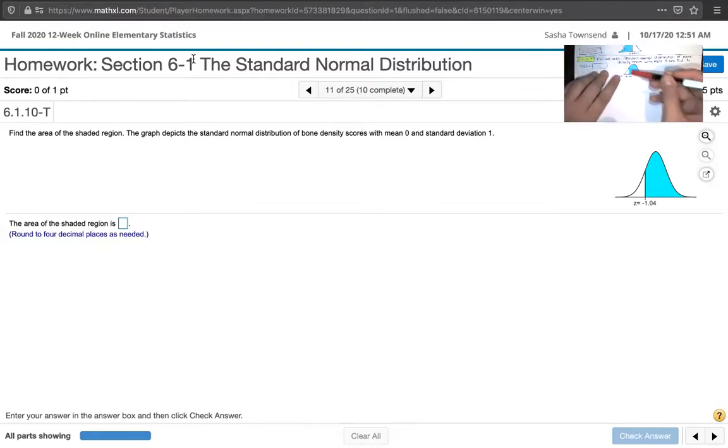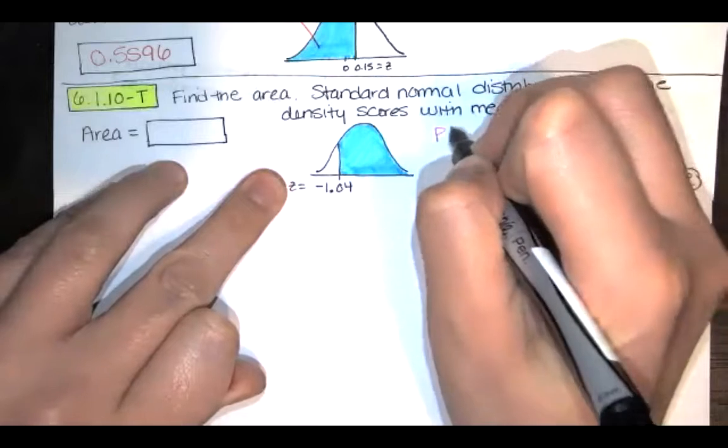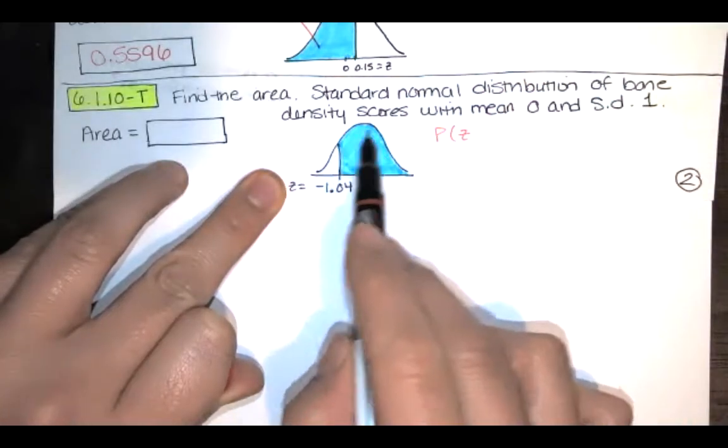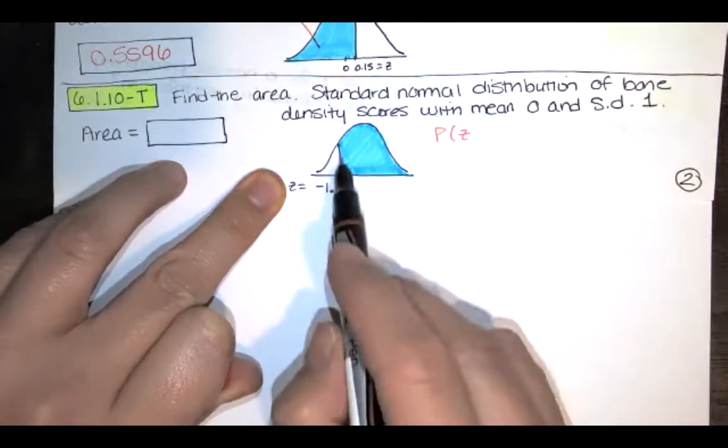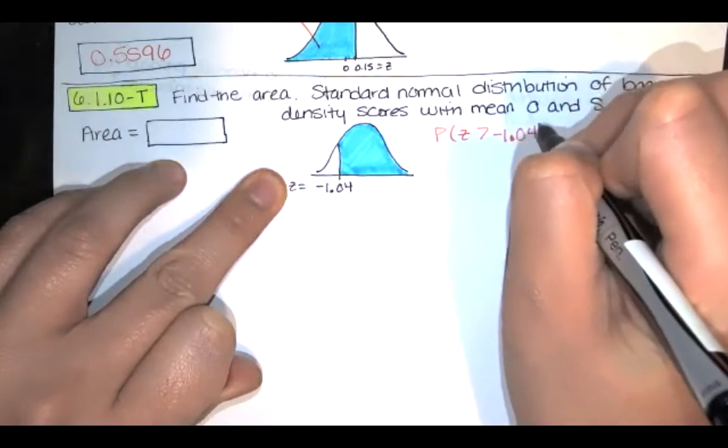Okay so we're interested in this area here, this blue area, and that's the probability that that particular z-score or that the z-score is greater than that particular z-score of negative 1.04.